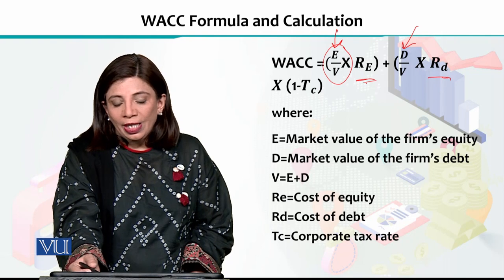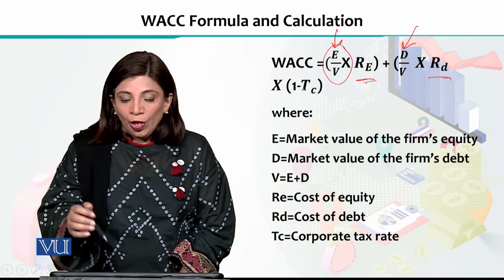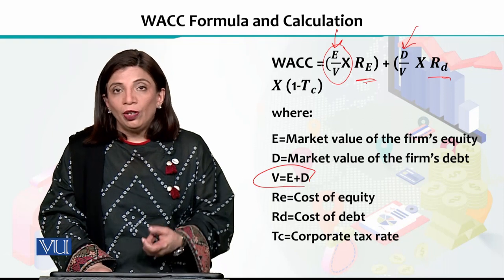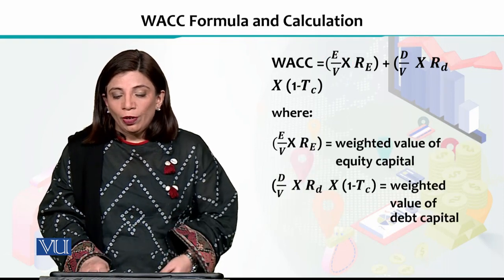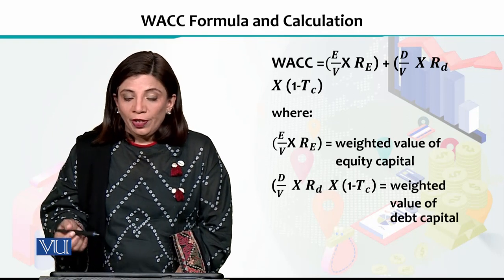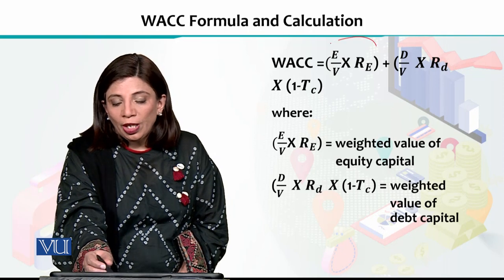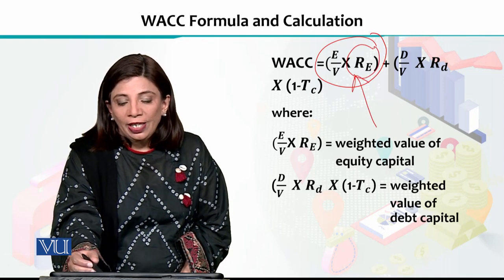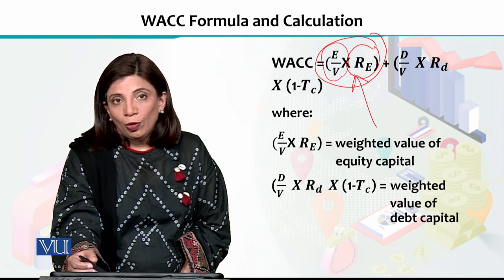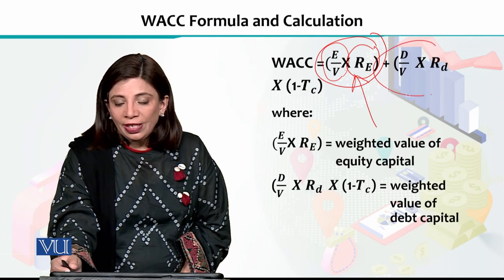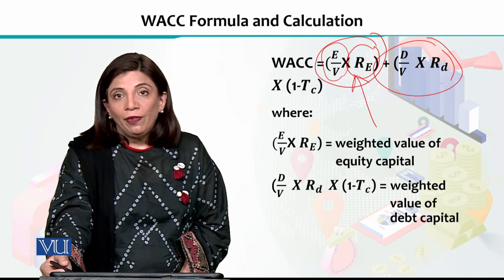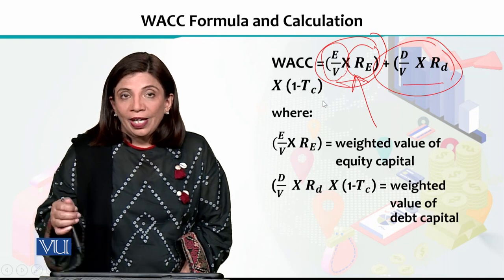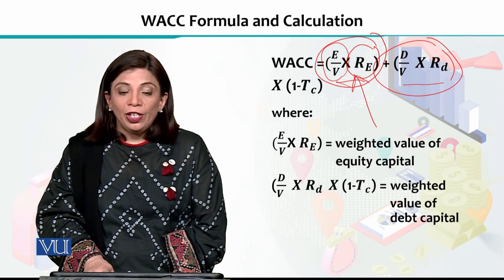Then you multiply by 1 minus the tax rate. V is basically the sum of equity and debt. We incorporate this information into the market in order to find out the rate of return. One section of the formula gives you the weighted value of the equity capital, and another gives you the weighted value of the debt capital. You multiply by 1 minus the tax rate to calculate the weighted average cost of capital.